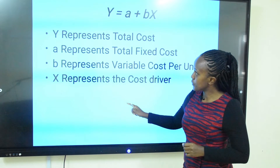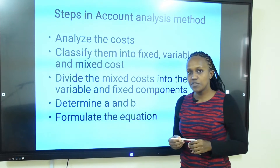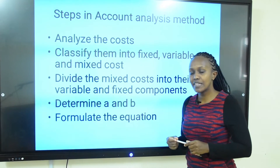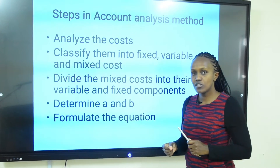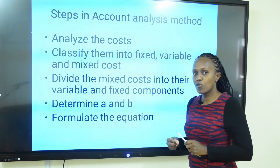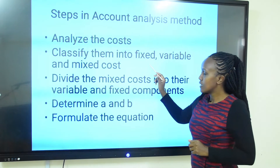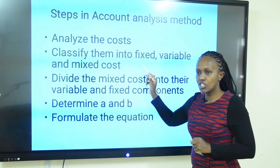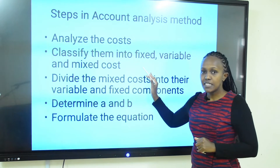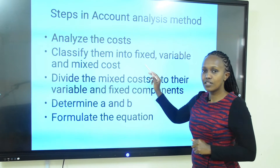In the account analysis method, we follow a few steps to achieve the objective. First, we analyze the costs. If you are given several costs incurred during production, you have to analyze those costs and use your intuition as the accountant to identify what type of costs they are. Once you analyze the costs, you classify them into fixed costs — costs that do not change in total as activity level increases, remaining constant within the relevant range. You identify costs that are fixed within that range of activities.